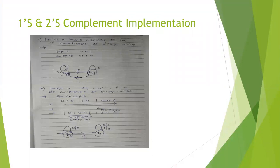Here is the 1s complement of a binary number. As we know, 1s complement means we are complementing every input bit. In binary we can take only two inputs: zero and one. So if my input is 1001, the output for one is zero, output for zero is one, output for zero is one, and one is zero. So my output will be 0110.